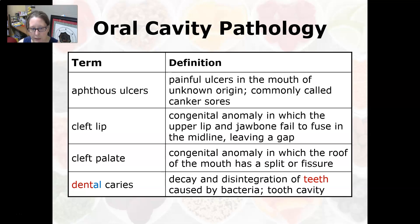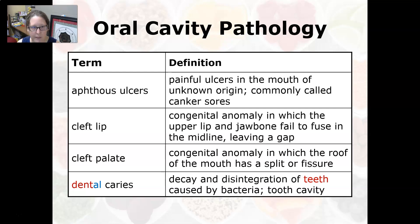A cleft palate is a congenital anomaly — they're born with it — in which the roof of the mouth has a split or a fissure. Again, it can interfere with the feeding of the baby.